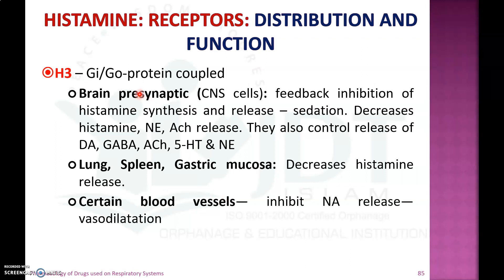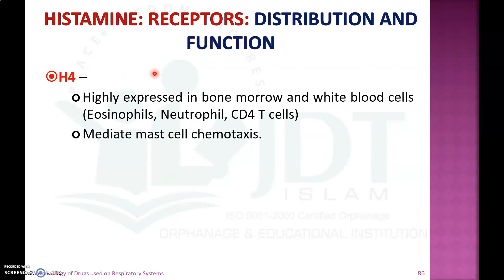The third receptor is the H3 receptor, a Gi and G0 protein-coupled receptor present in brain synapses, where it produces negative feedback inhibition of histamine synthesis and release, causing sedation and decreasing histamine, norepinephrine, and acetylcholine release. It also controls the release of dopamine, GABA, acetylcholine, 5-HT, and noradrenaline. H3 receptors in the lungs, spleen, and gastric mucosa decrease cyclic AMP, reducing histamine release. In certain blood vessels, they inhibit noradrenaline release and produce vasodilation.